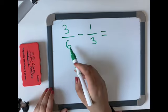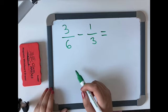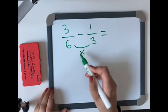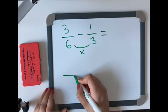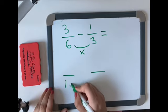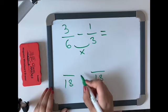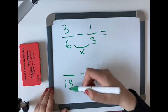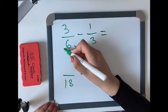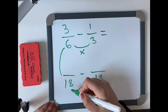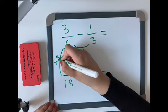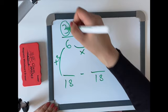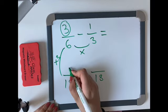As you can see the denominators are not the same so we must multiply them together. 6 times 3 equals 18. Don't forget your subtraction sign. And if you look at this side over here, how do I get from 6 to 18? You multiply it by 3. What you do to the bottom, you must do to the top. So you look at our numerator. 3 times 3 equals 9.